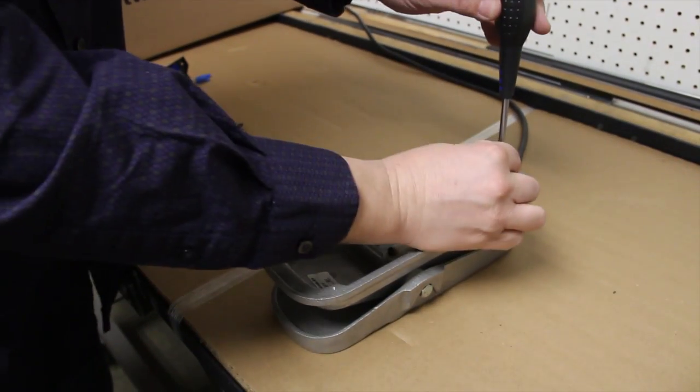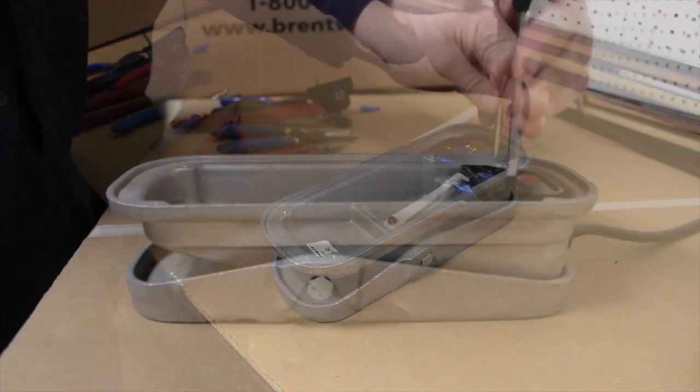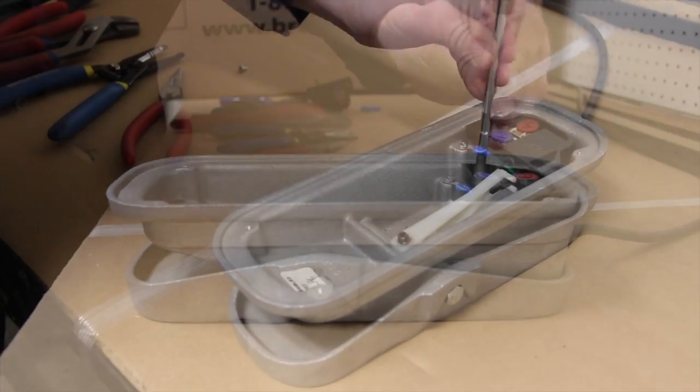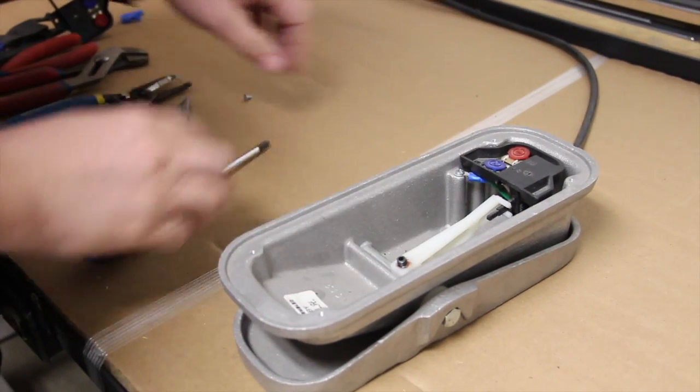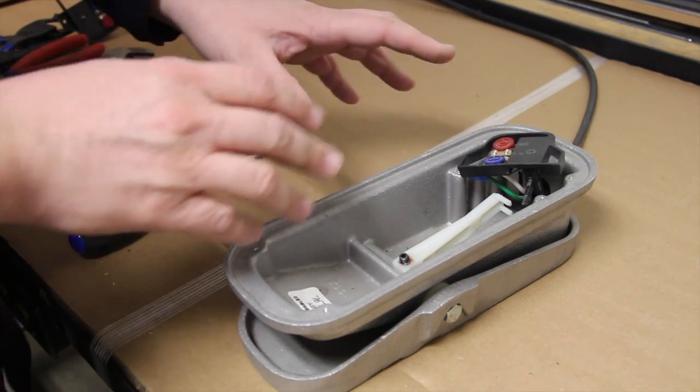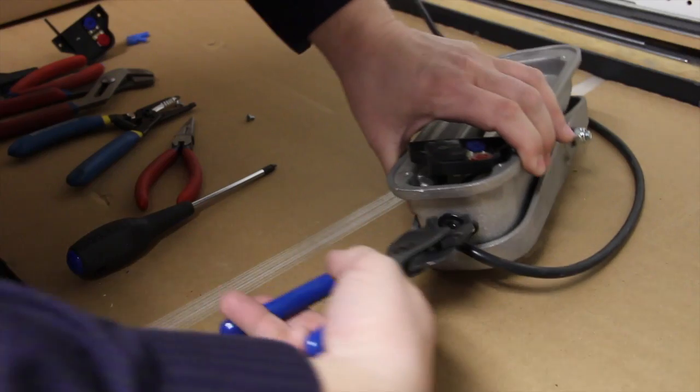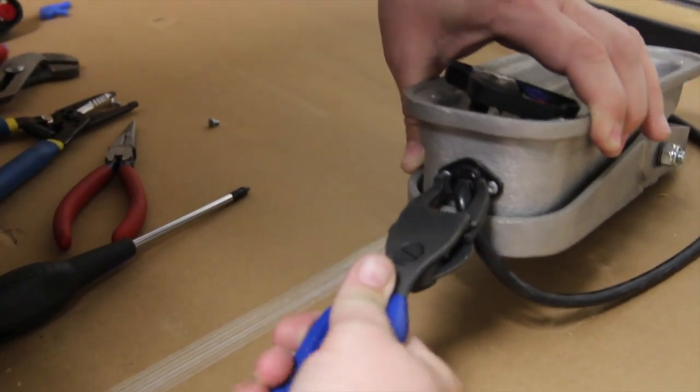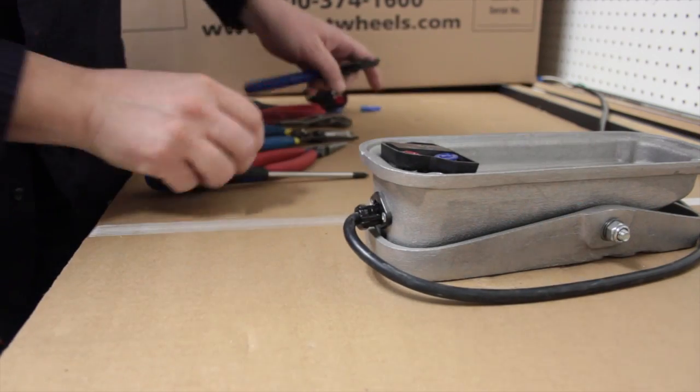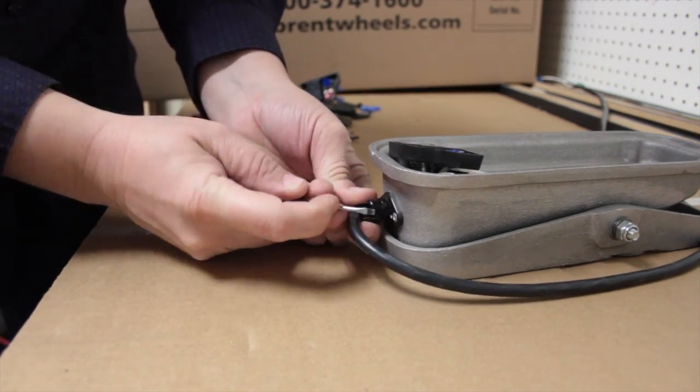To begin with, start by removing your sub-assembly. There's no need to loosen the arm at this point. We're going to give ourselves a little bit more room by extracting the strain relief. Remove the strain relief and give ourselves some wire here.